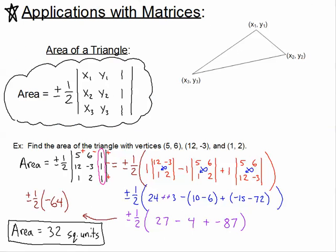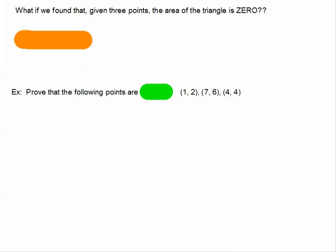The first tutorial explored the area of a triangle formula when you're given three ordered pairs. So I'm asking the question, what happens if we find that given three ordered pairs, the area of the triangle that we thought would be there becomes zero?